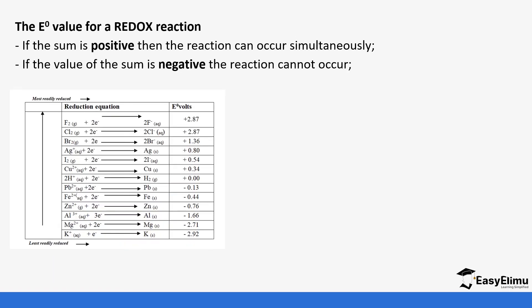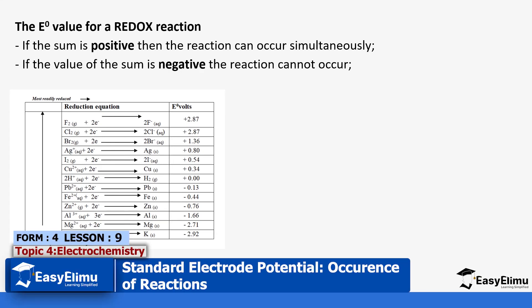The E values of a redox reaction — the sum of the EMF — if you get a value that is positive, it tells us that this reaction is going to spontaneously occur. But if you get a negative value, it tells us that this reaction cannot occur. So EMF values help us to know if some reactions will occur, which also has applications in other industries.